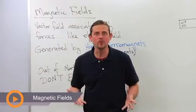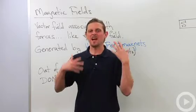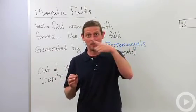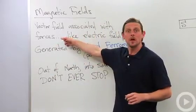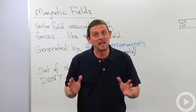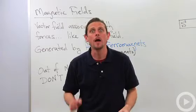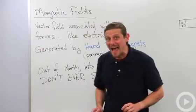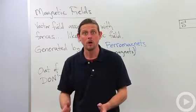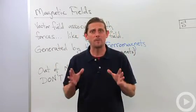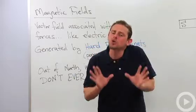Let's talk about magnetic fields. What is a magnetic field? A magnetic field is a vector field, which basically means you've got a vector at each point. This vector field is associated with forces, just like the electric field. An electric field always points in the direction that the force on a positive charge would point. Magnetic fields are a little different — more complicated in their relationship to the actual force — but they're still associated with a force.